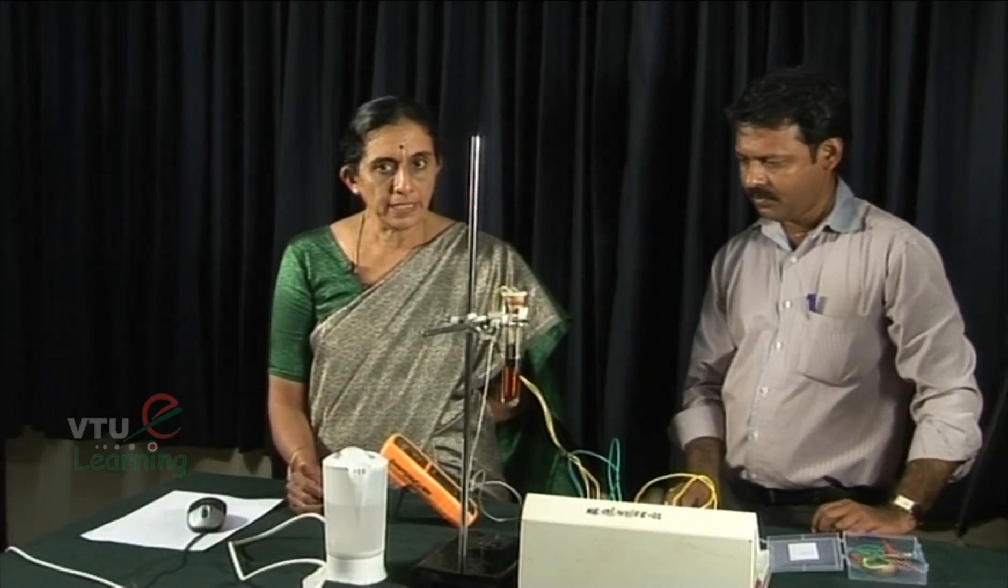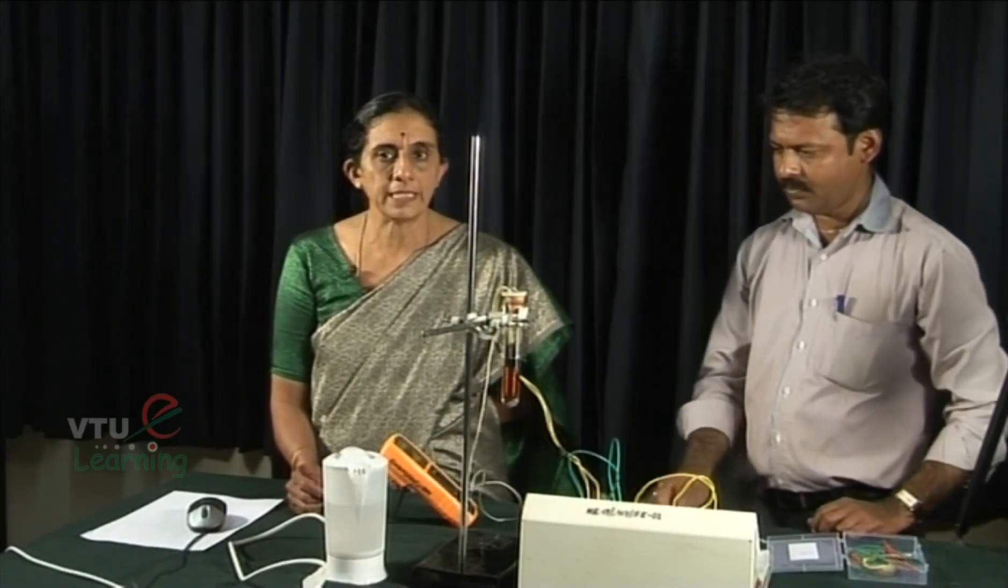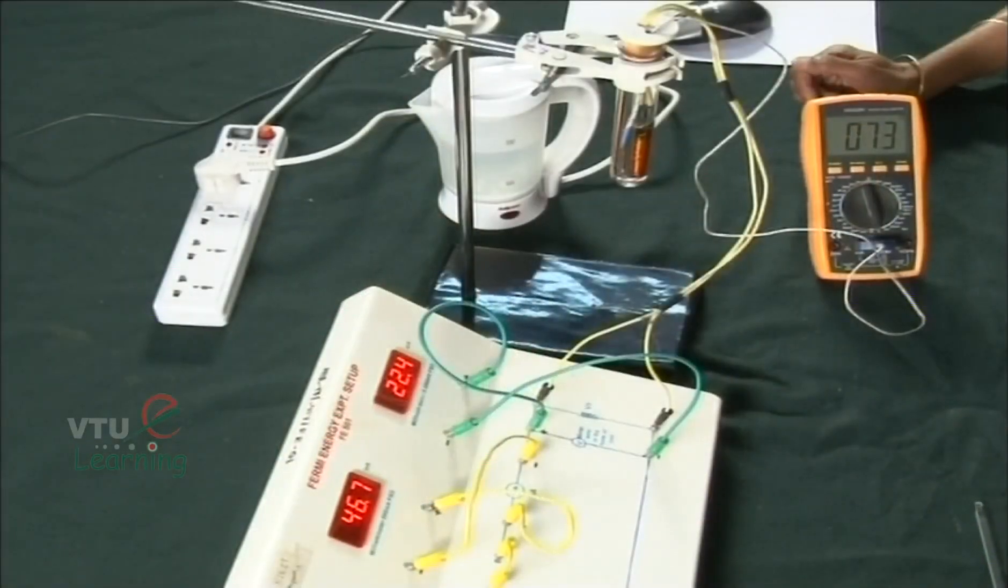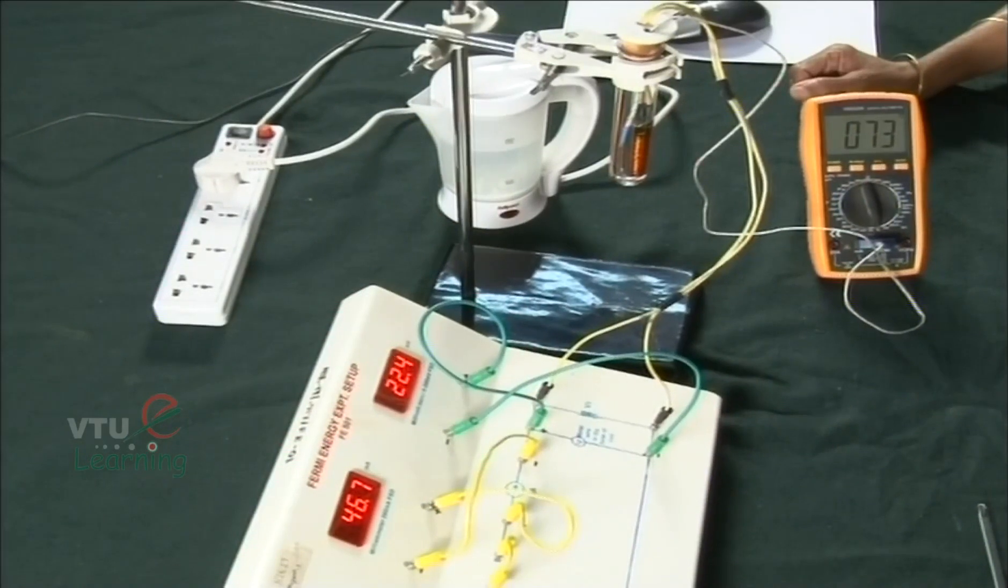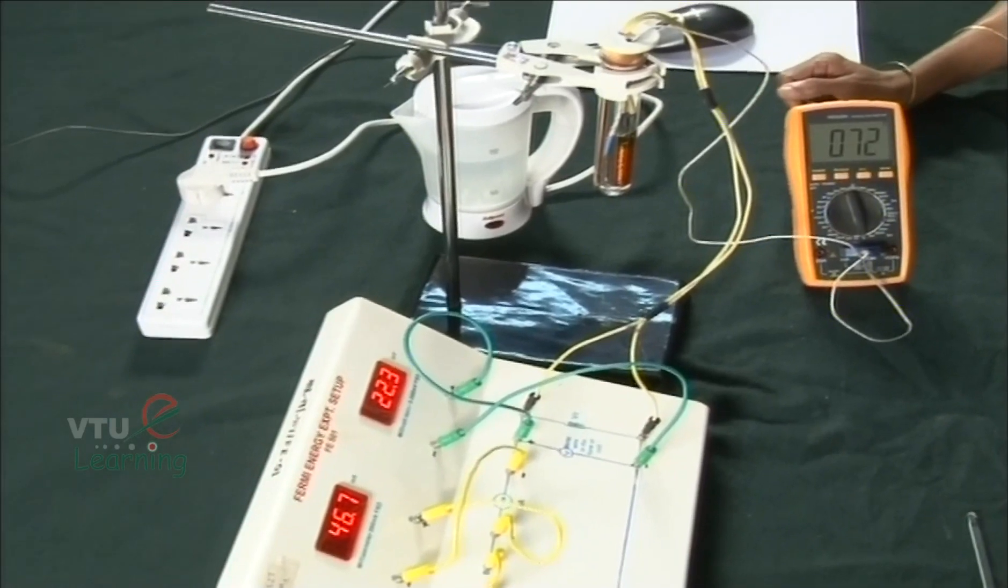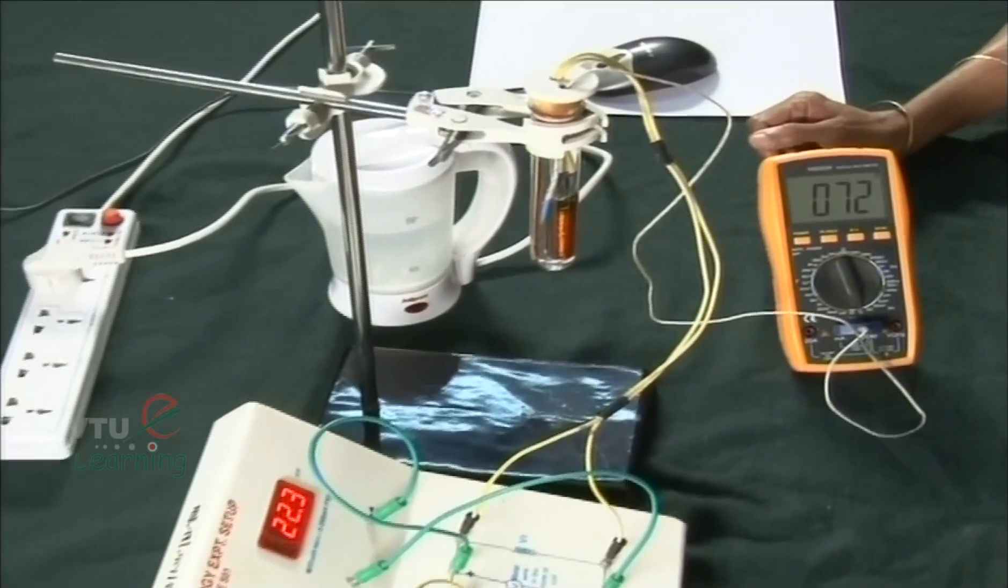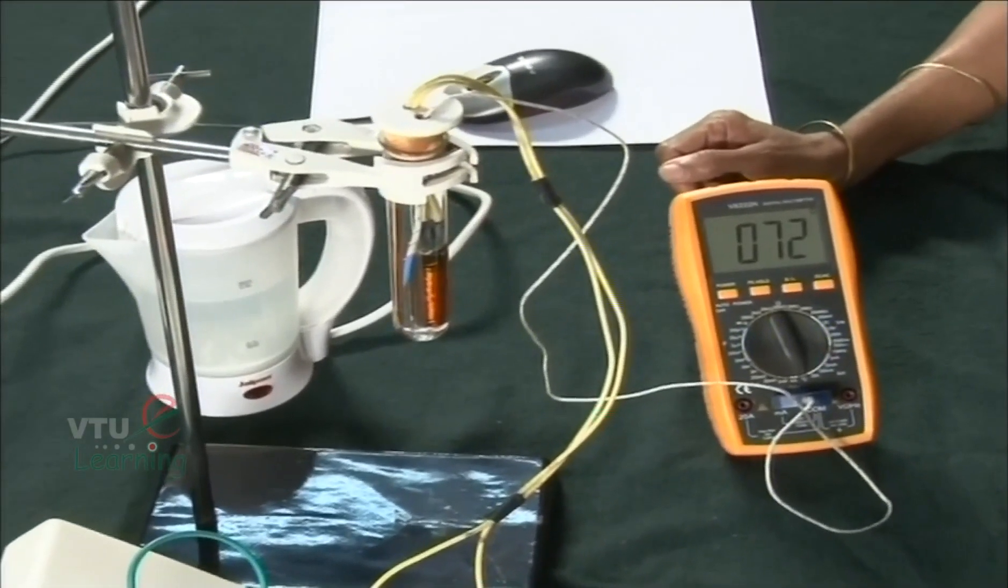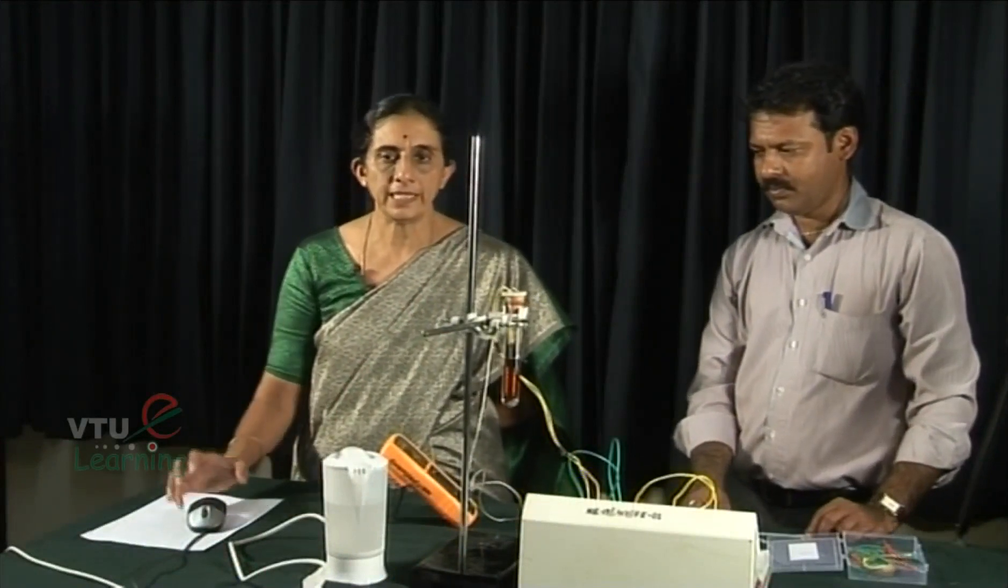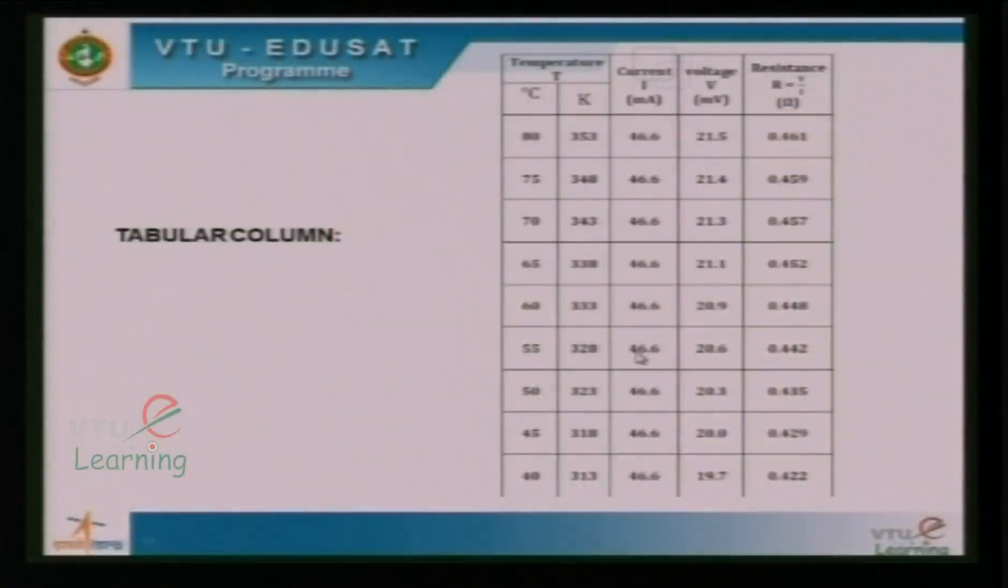Now we wait till the temperature climbs down to 75 degree centigrade. When it is 75, we record the reading, and when once it touches 70, again we take the readings of milliammeter and the millivolt meter. Like this, we have to continue till the temperature has come down to 40 degree centigrade and we have recorded all the readings as indicated in this tabular column.